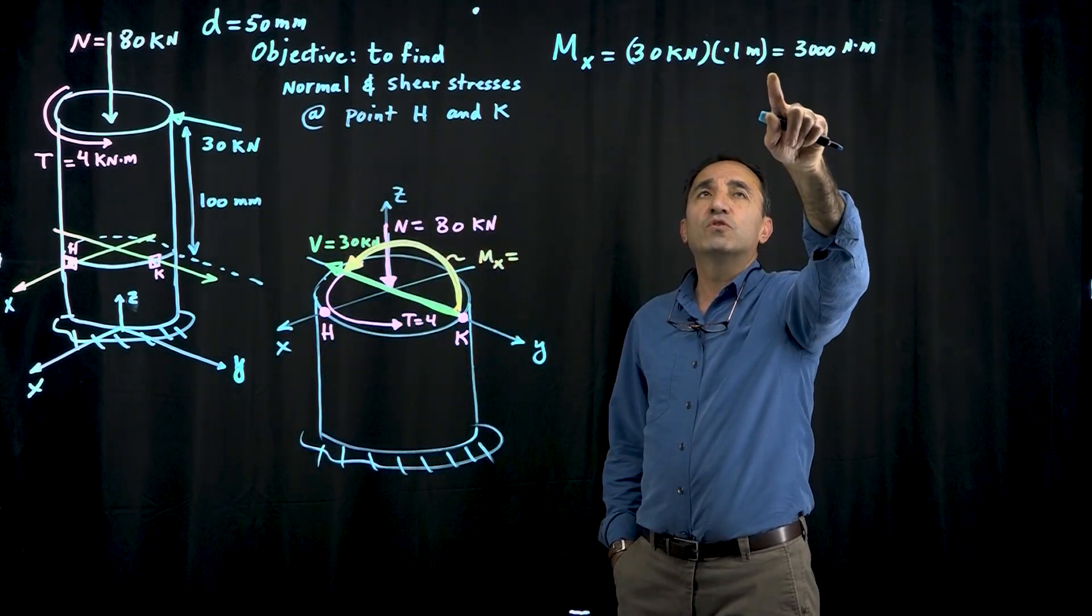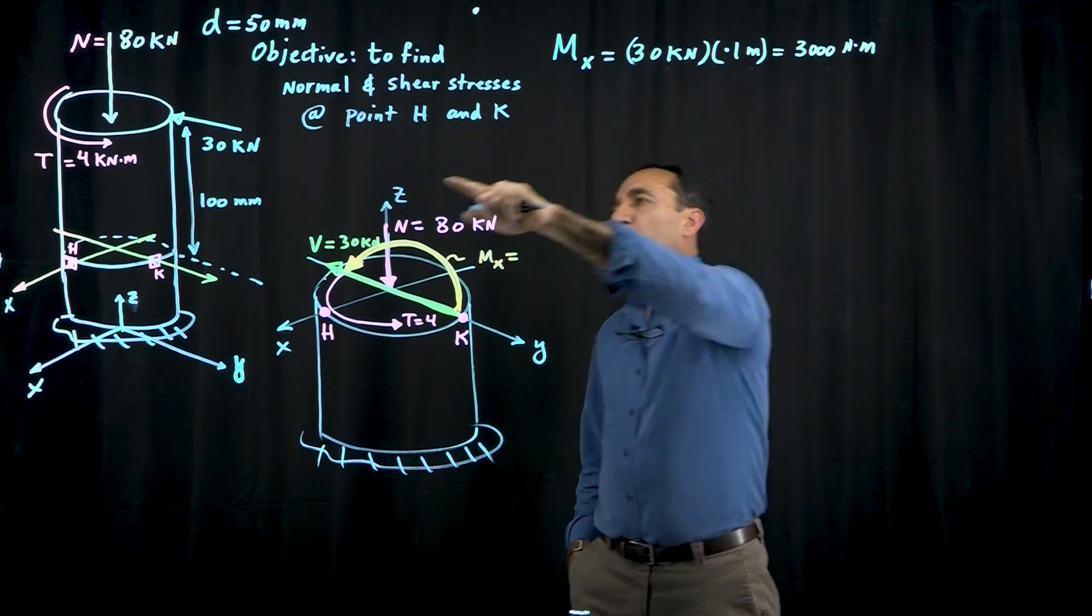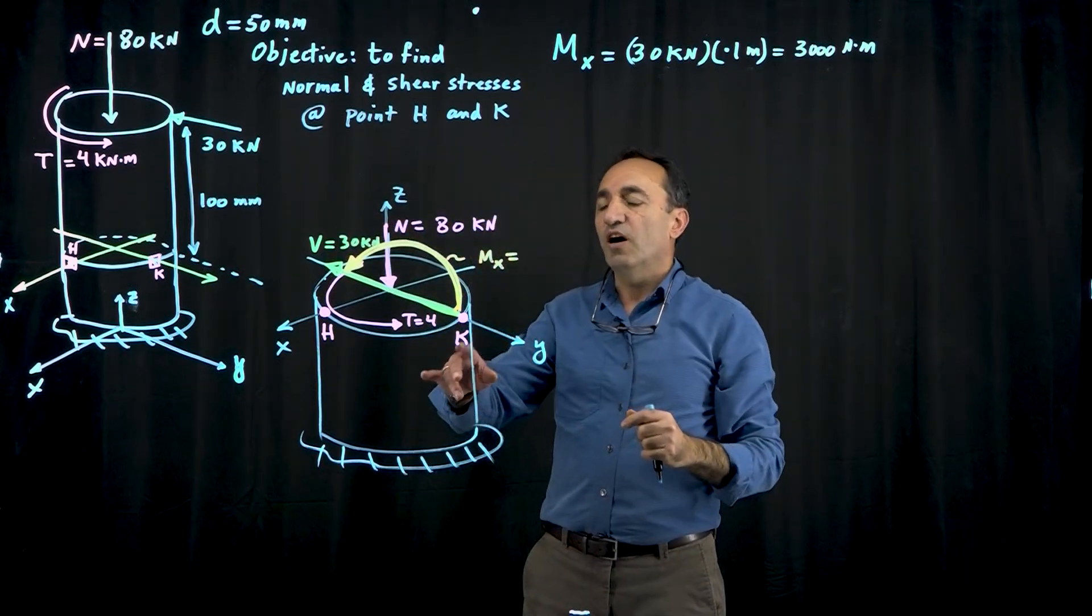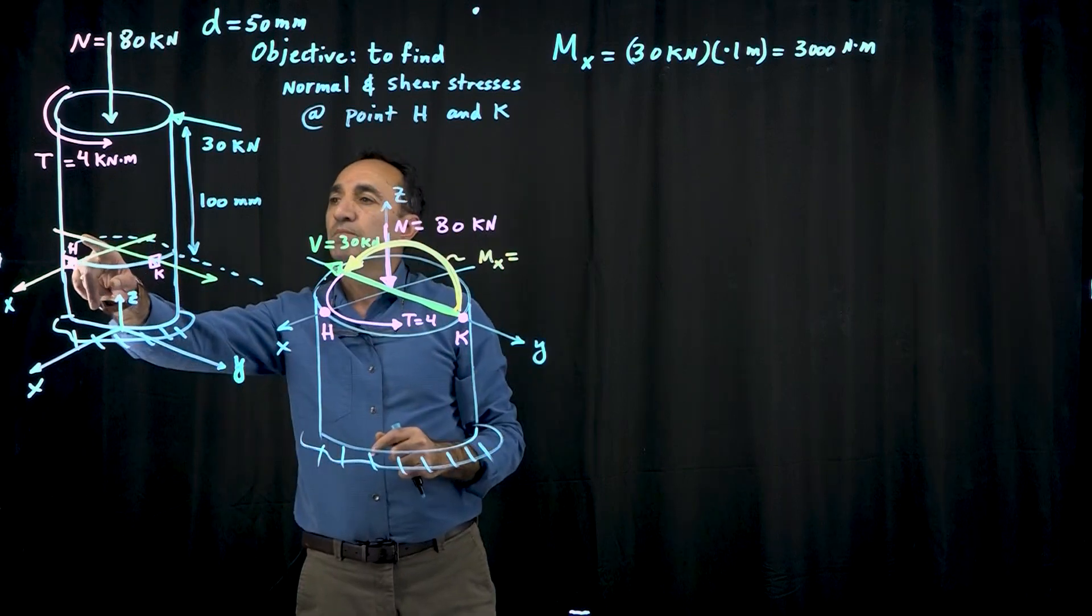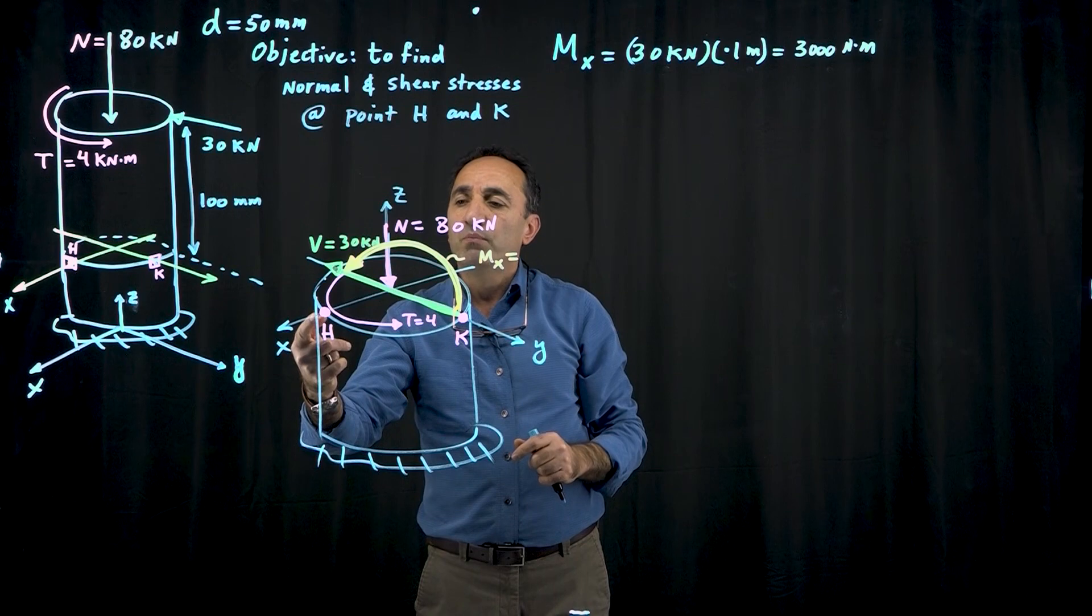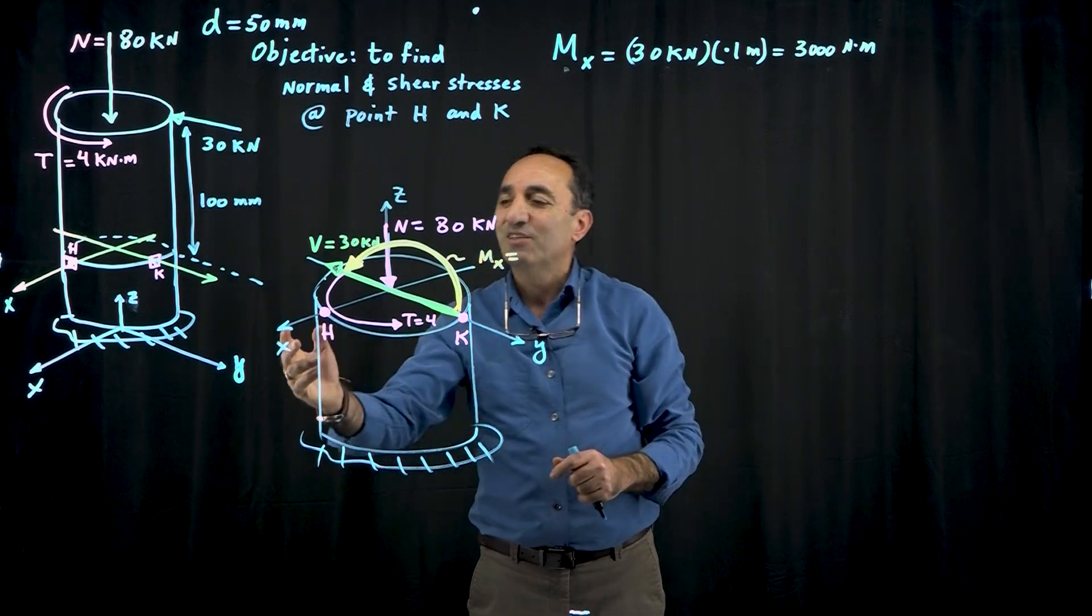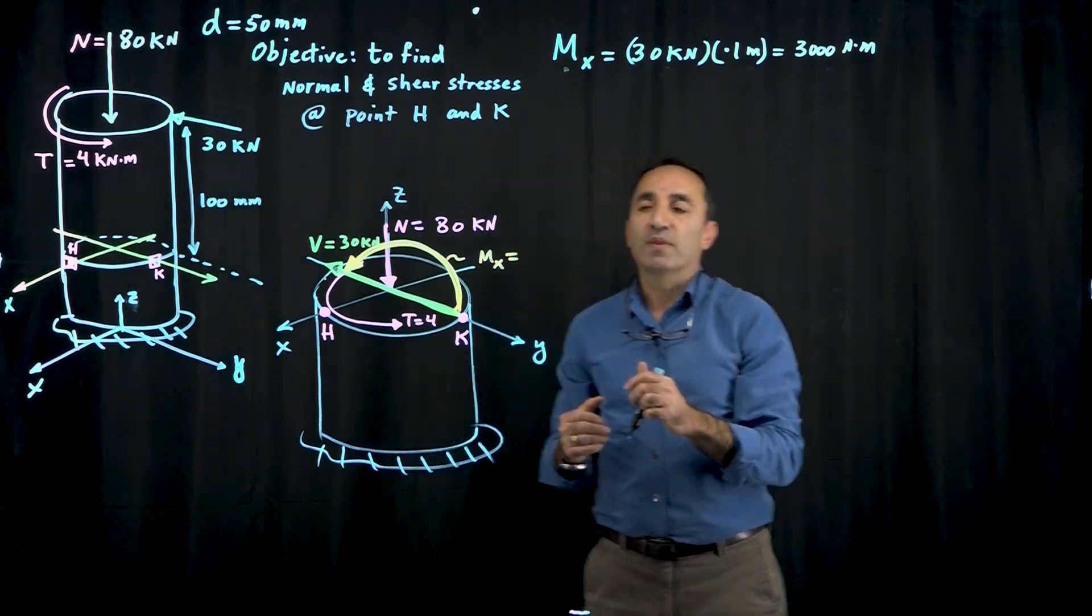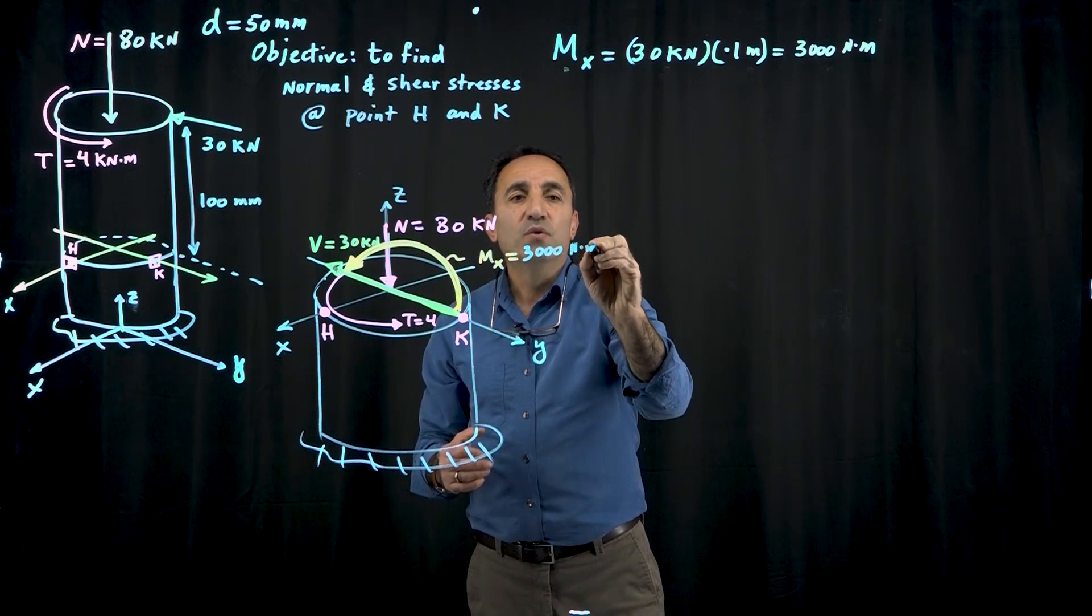That generates a moment about the x-axis: 30 kilonewtons times 0.1 meters equals 3000 Newton meters. This puts point K in tension and a point here in compression. But look at point H—it's on the x-axis, right on the neutral axis for this moment, so there's no stress at H due to that moment.